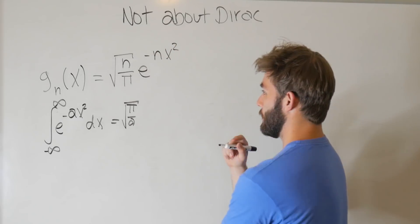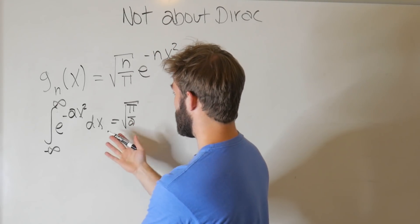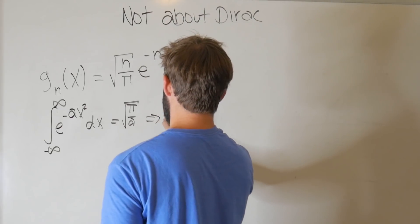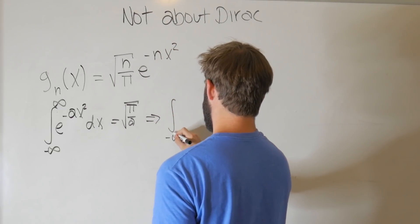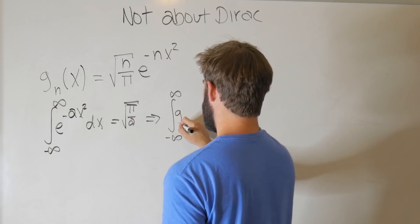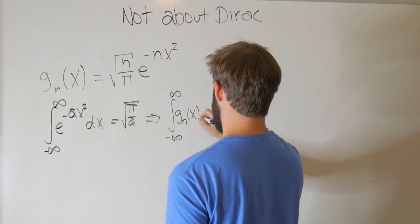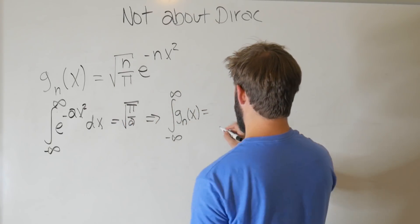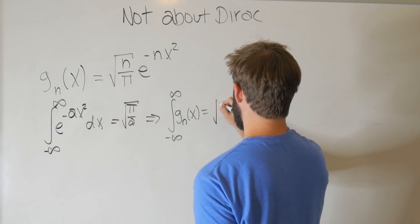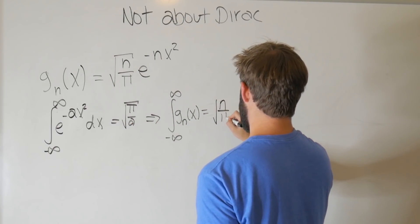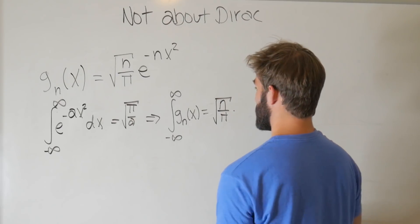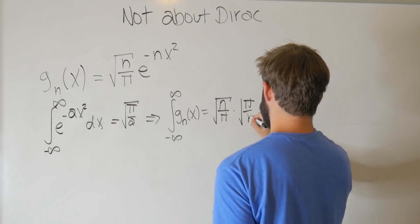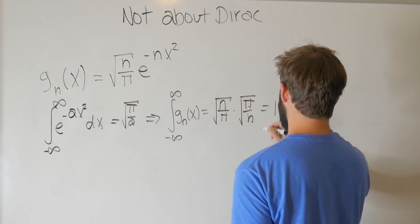And now what I want to do, is I want to calculate the integral of this bad boy. So, the integral negative infinity to infinity of g sub n of x, is equal to, well this is just a constant, this n over pi, so that's going to come out, it's root n over pi, times root pi over n, which is equal to one.